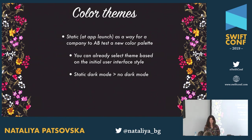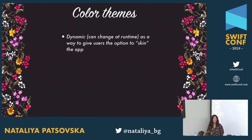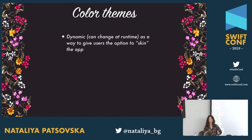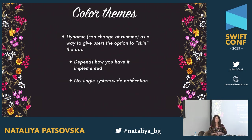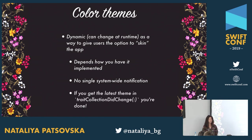A more dynamic color theming solution is where you allow the user to change their app skin and expect it to automatically populate. If you have that infrastructure, you already have a way to tell all views to update. There is no system-wide notification for dark mode or other trait collection changes, but you can implement trait collection did change in one place and propagate to all your views. In that case, your dark mode work is pretty much done.